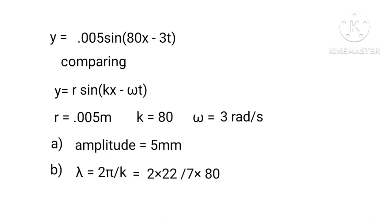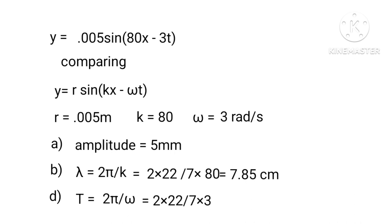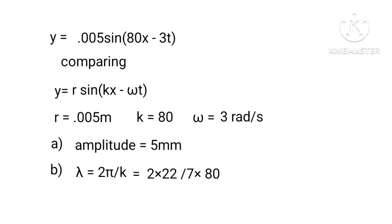Amplitude equals 5 millimeters. For (b), wavelength λ = 2π/k = (2 × 22/7) / 80 ≈ 7.85 cm. For (c), period T = 2π/ω = (2 × 22/7) / 3 = 44/21 ≈ 2.09 s.